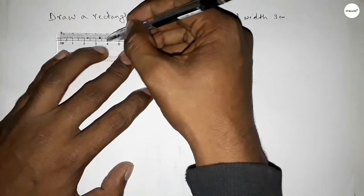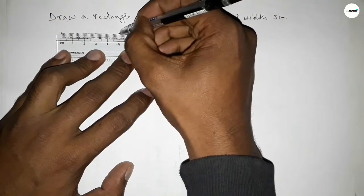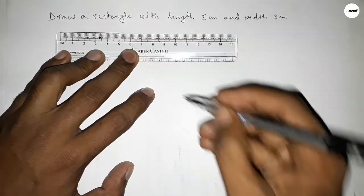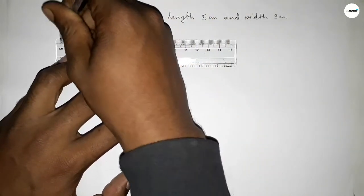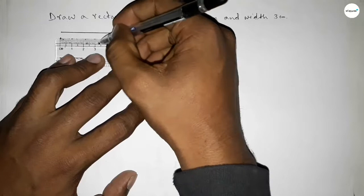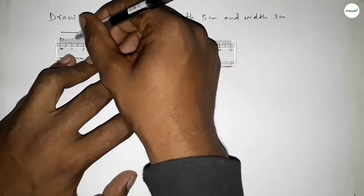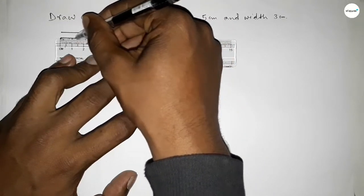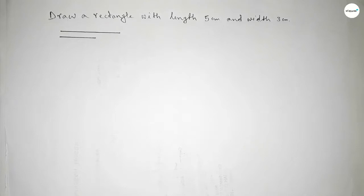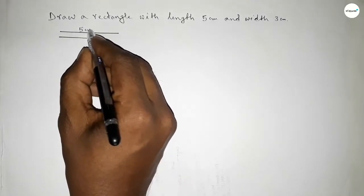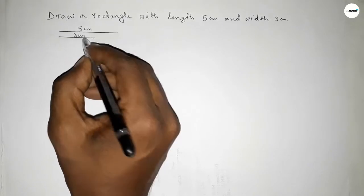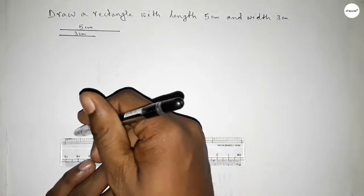Drawing a line of length 5 centimeters — 1, 2, 3, 4, 5. Next, drawing a line of length 3 centimeters — 1, 2, 3. So this is the 5 centimeter line and this is the 3 centimeter line.